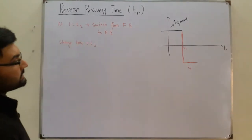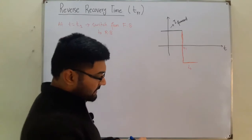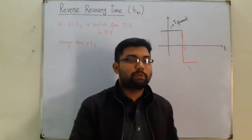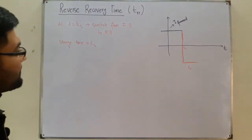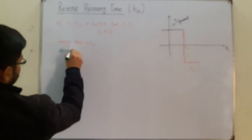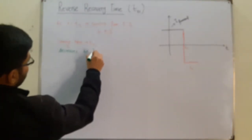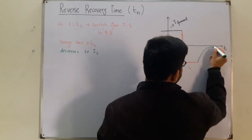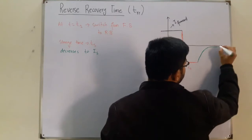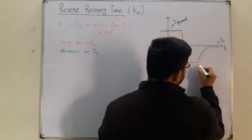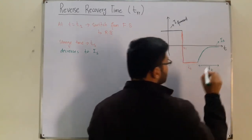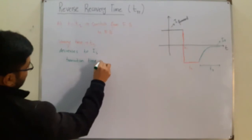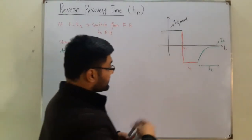In the reverse bias state, after some time, the current decreases to the value of Is — the reverse saturation current. The time it takes to decrease to Is is called the transition time, represented by Tt. So we have storage time Ts (shown in red) and transition time Tt.